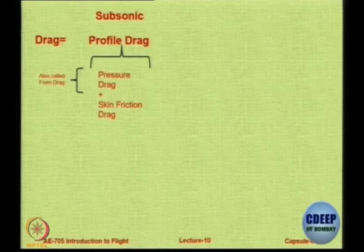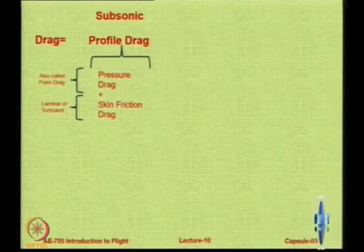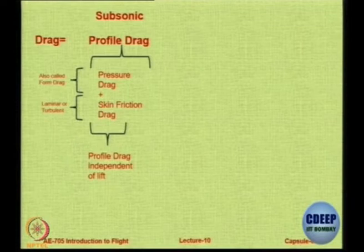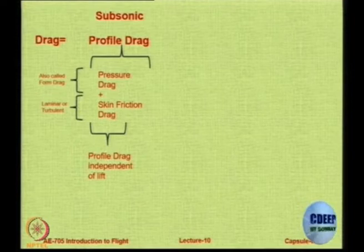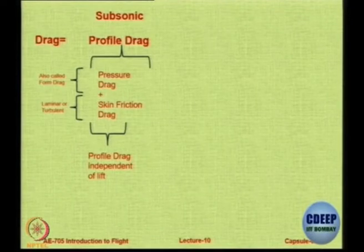You also have to add something called skin friction drag, which is because of the flow of air on the body. So one is shape and the other is surface area. Together they are called profile drag — profile is pressure plus skin friction, or form plus skin friction. Skin friction can be because of laminar flow, turbulent flow, or both. This part of drag acts even on bodies which are not generating any lift, so you can call it lift-independent profile drag. There is also some lift-dependent profile drag.